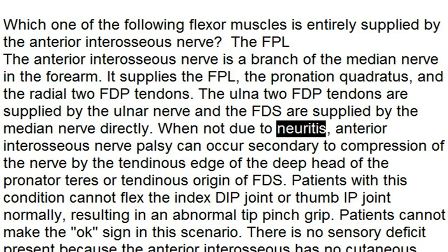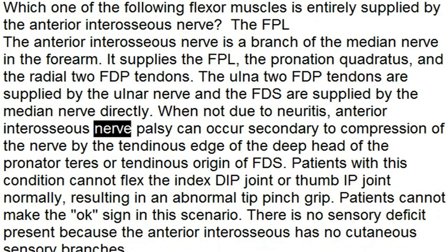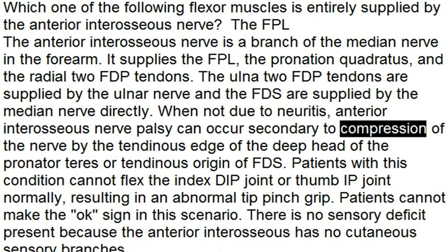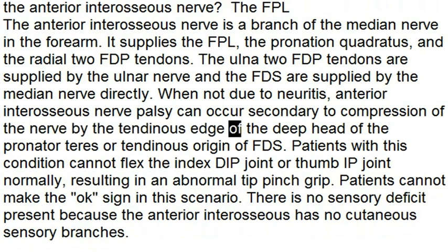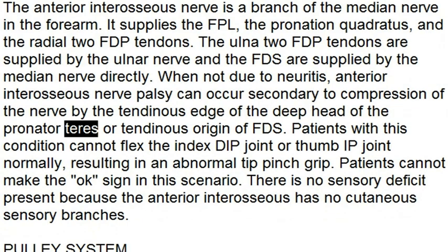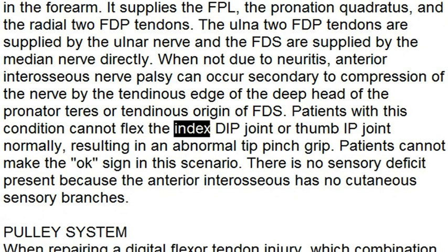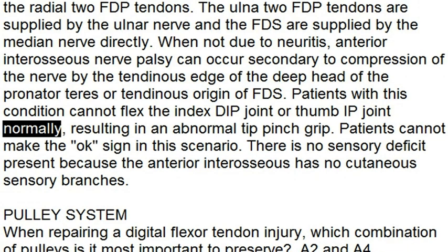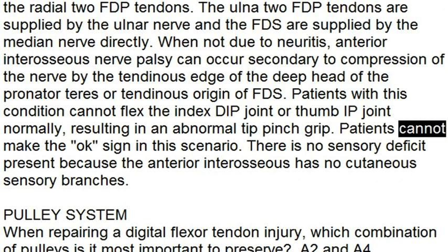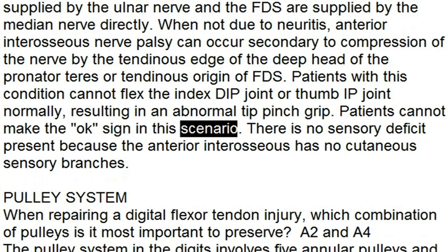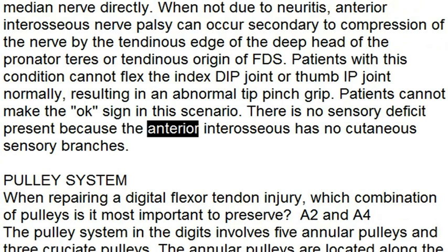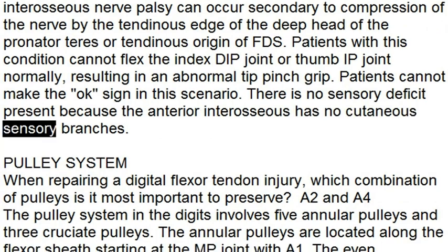When not due to neuritis, anterior interosseous nerve palsy can occur secondary to compression of the nerve by the tendinous edge of the deep head of the pronator teres or tendinous origin of FDS. Patients with this condition cannot flex the index DIP joint or thumb IP joint normally, resulting in an abnormal tip pinch grip. Patients cannot make the OK sign. There is no sensory deficit because the anterior interosseous nerve has no cutaneous sensory branches.